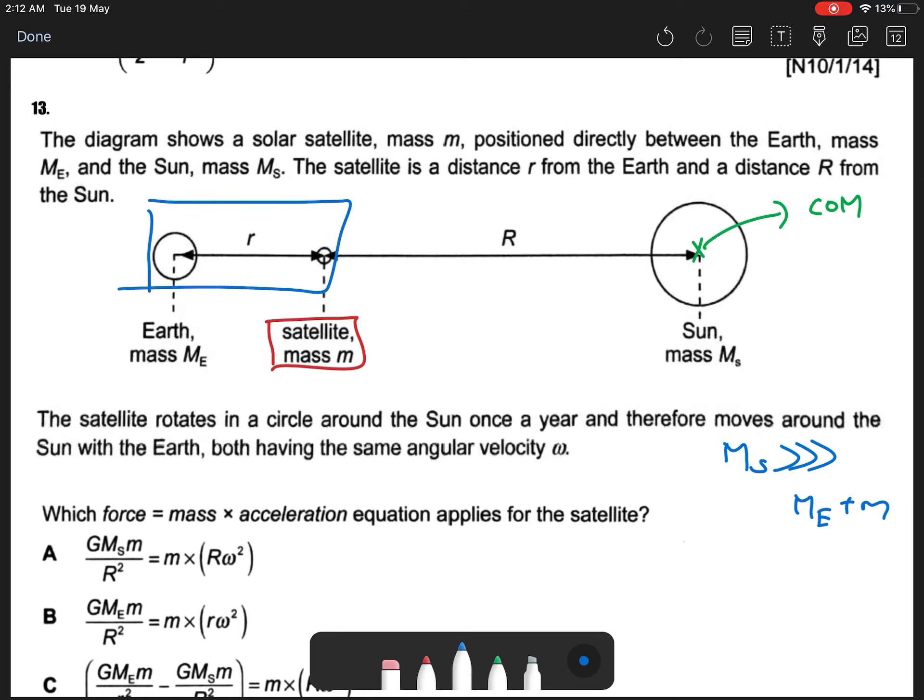Your Earth and satellite can be considered as something like an ecosystem and revolve around your Sun's center of mass. So we look at our satellite. The satellite will experience two forces: one is due to your Earth, one is due to your Sun.